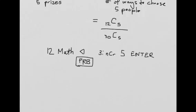That will give you 792. Then you have 30C5. You're going to enter that the same way. And for that you get 142,506. And then when you divide this, you can just divide that in your calculator and just type in 792 divided by 142,506.